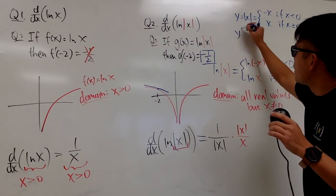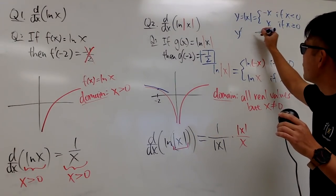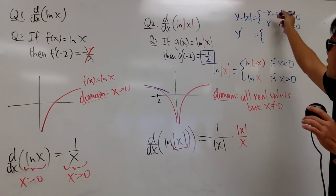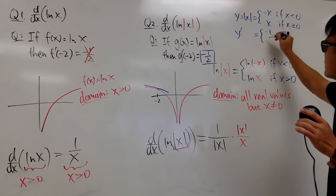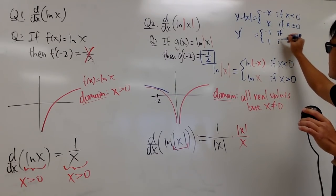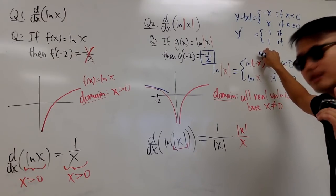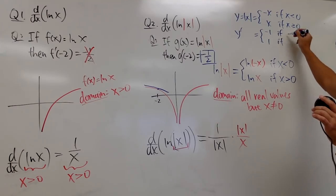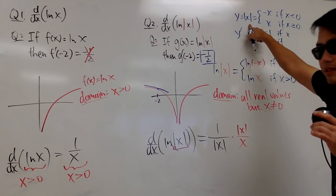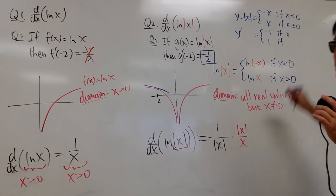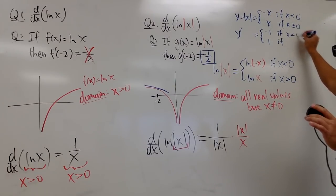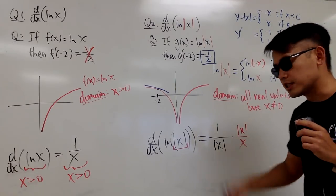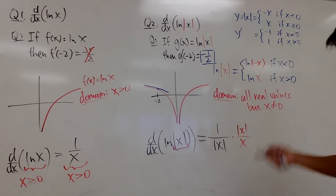Let me show you why. Suppose y equals absolute value of x, which equals negative x if x is less than 0, and x if x is greater than or equal to 0. Then y prime equals negative 1 for x less than 0, and 1 for x greater than 0. This is the situation where the domain of the derivative is smaller — absolute value of x is not differentiable at 0, so we write x less than 0 and x greater than 0 only.